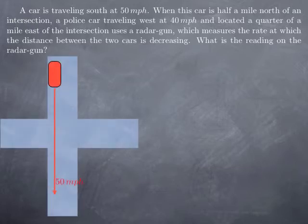So here is the situation. We have a car traveling south at 50 miles per hour and that is presently north of the intersection. The police car travels at 40 miles per hour west and is presently east of the intersection.